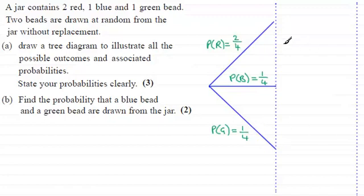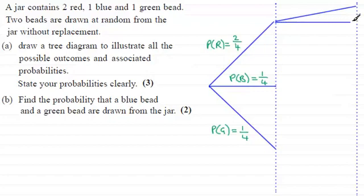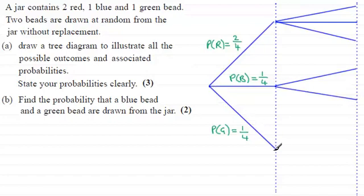We now go on to looking at what happens for picking out our second bead. If we picked out our first bead and it was a red bead, then we could still pick out another red, blue, or green — so three possible outcomes. But if we picked a blue first of all, then there'd only be reds and greens in the jar, so only two possible outcomes: either a red or a green. And if we picked a green first, there'd only be reds or blues left — so again two outcomes.